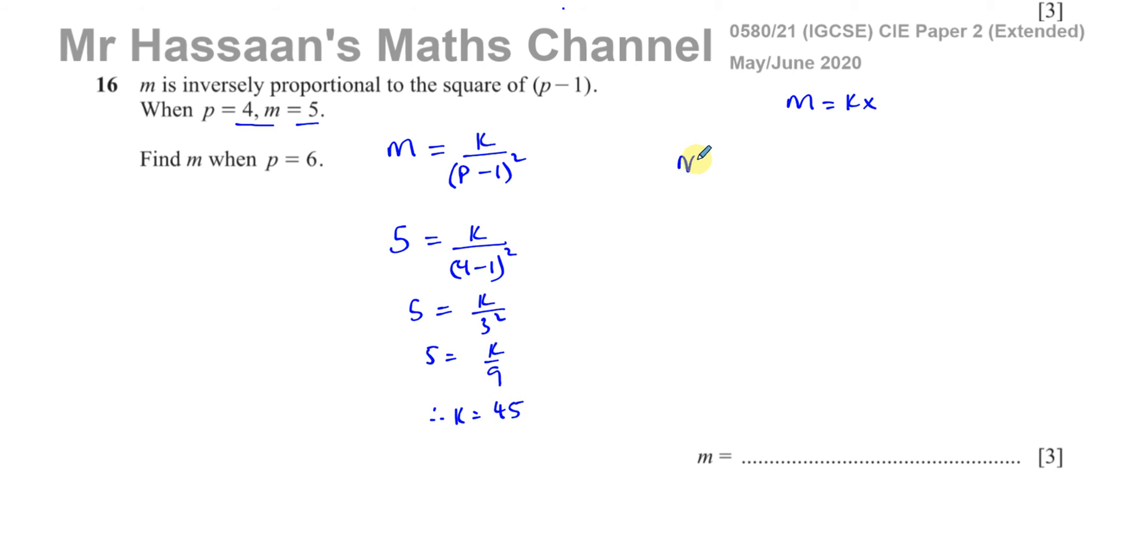So now we can say the equation that connects m and p is m equals 45 divided by p minus 1 squared. And then it says find m when p equals 6. So now all we have to do is substitute instead of p, 6. So we have 45 over 6 minus 1 squared. So m is equal to 45 over 5 squared.